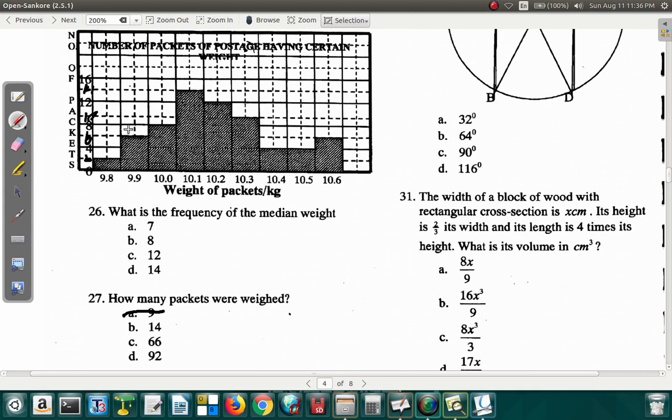Obviously A is out because it's more than 9, and it's 14 plus more packages. So it can't be 14. Is it 66 or is it 92? You could count these individually. This is 2 plus 6, that's 8, plus 8 is 16. This is 12, 16 and 12 is 28, plus 12 is 40, plus 10 is 50, plus 4 is 54, plus 4 is 58, and 8 more is 66. So the answer is 66.